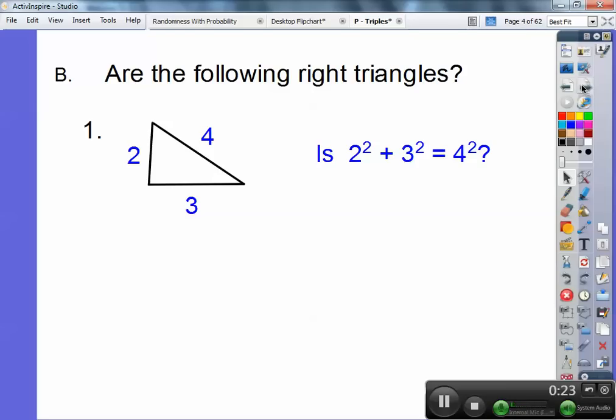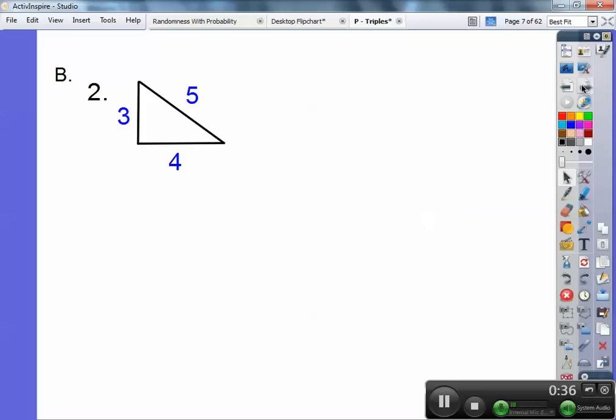So ask yourself, is 2 squared plus 3 squared equal to 4 squared? If it is equal to 4 squared, then it is a right triangle. If it's not, then it's not a right triangle. And 4 plus 9 does not equal 16, so it's not a right triangle. It's a triangle, it's just not a right triangle.